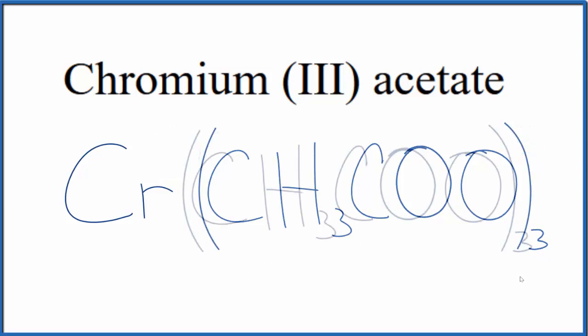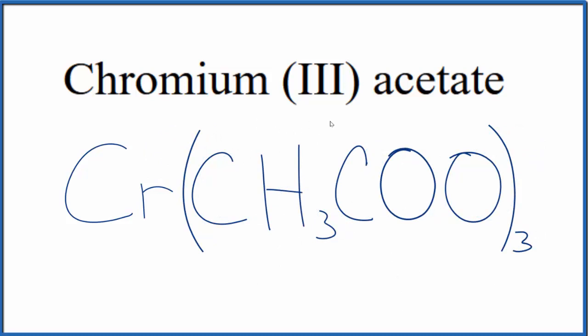So this is the formula for chromium-3-acetate, C-R-CH3-COO. And note we have 3 of these acetate ions.